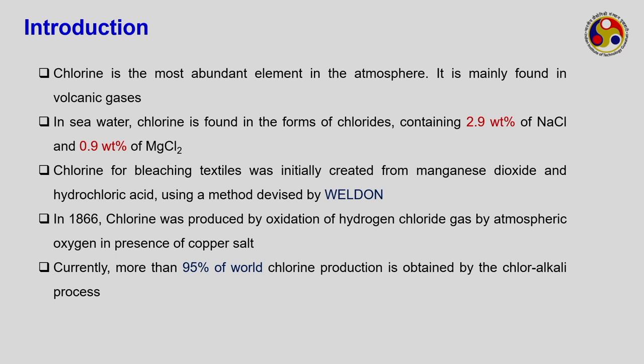Chlorine is the most abundant element in the atmosphere. It is mainly found in volcanic gases, but also in ionic chlorides like potassium chloride and sodium chloride. In sea water, chlorine is found in the form of chlorides — containing 2.9 weight percent sodium chloride and 0.9 weight percent magnesium chloride. This large amount of chlorine in sea water is what we call the prime solution.